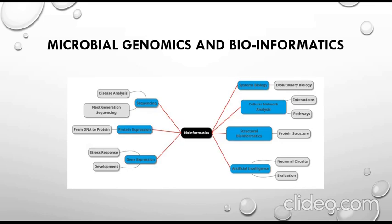Bioinformatics actually happens in various ways: systems biology, evolutionary biology, cellular network analysis. We can also see structural bioinformatics, such as protein structure prediction, with the help of bioinformatics and artificial intelligence, which is used in neural circuits and evolution studies. Gene expression can also be checked with the help of bioinformatics — how a particular gene responds to stress and how the gene is expressed.